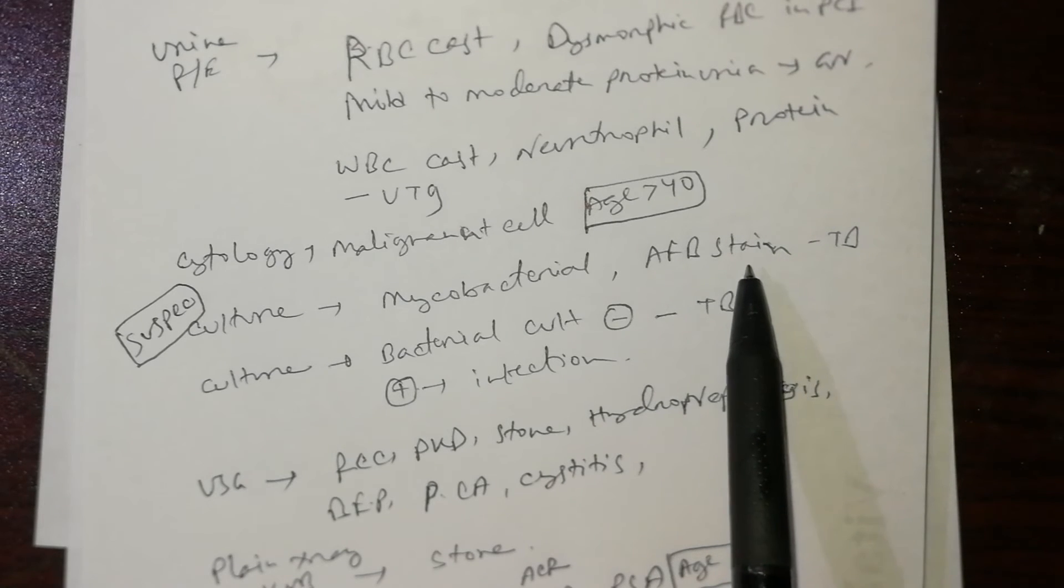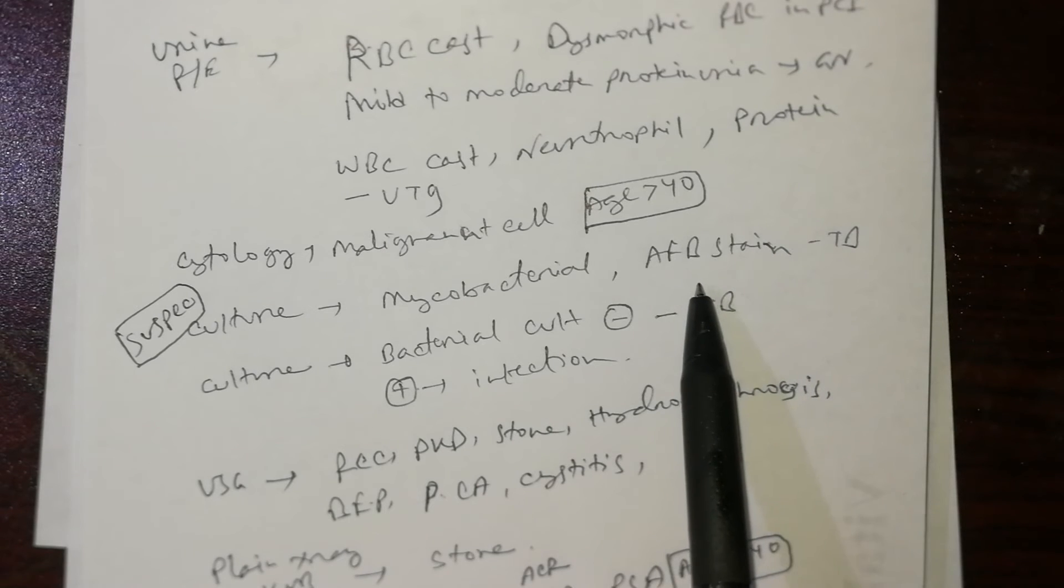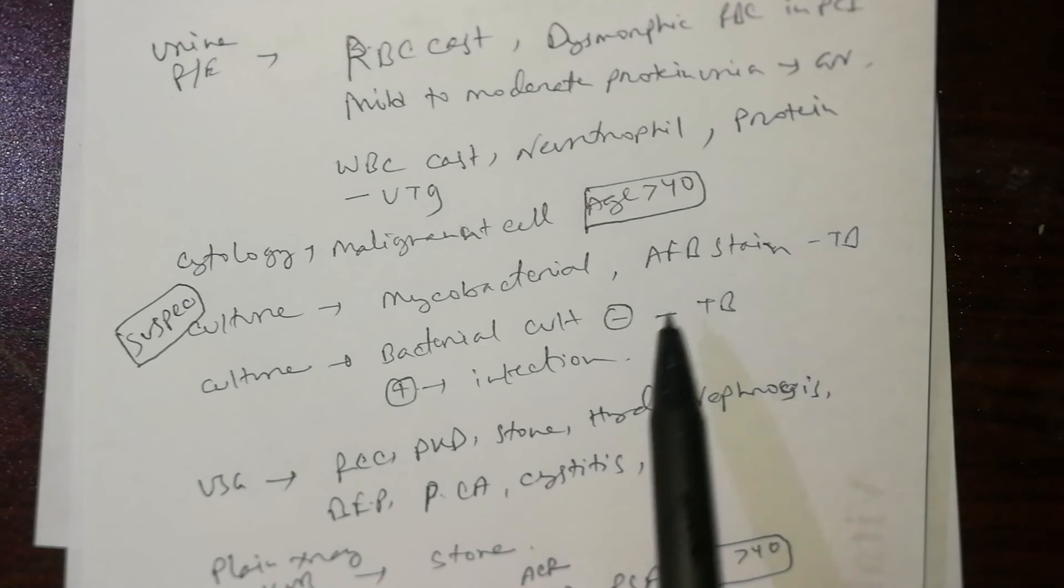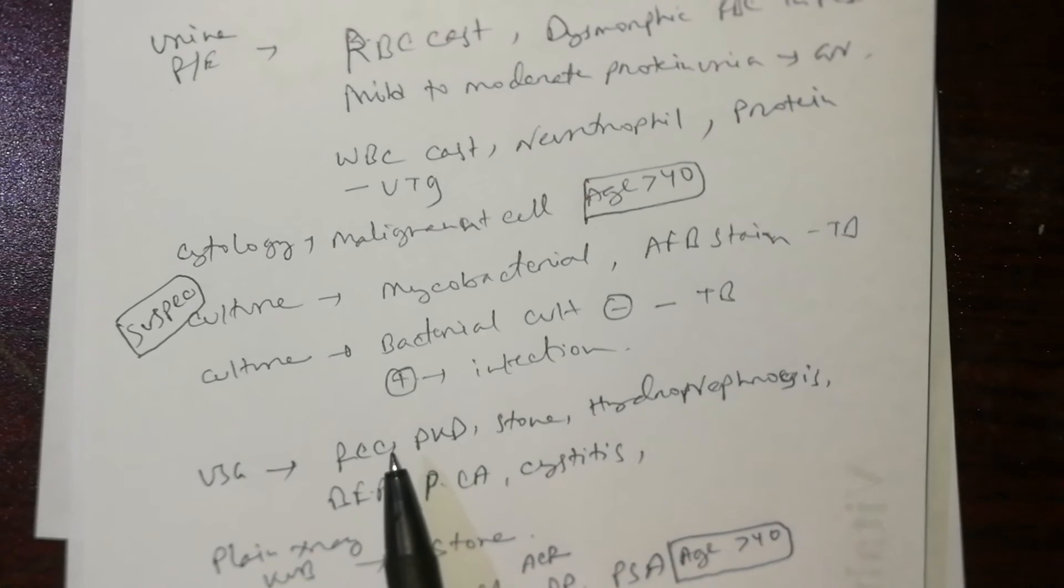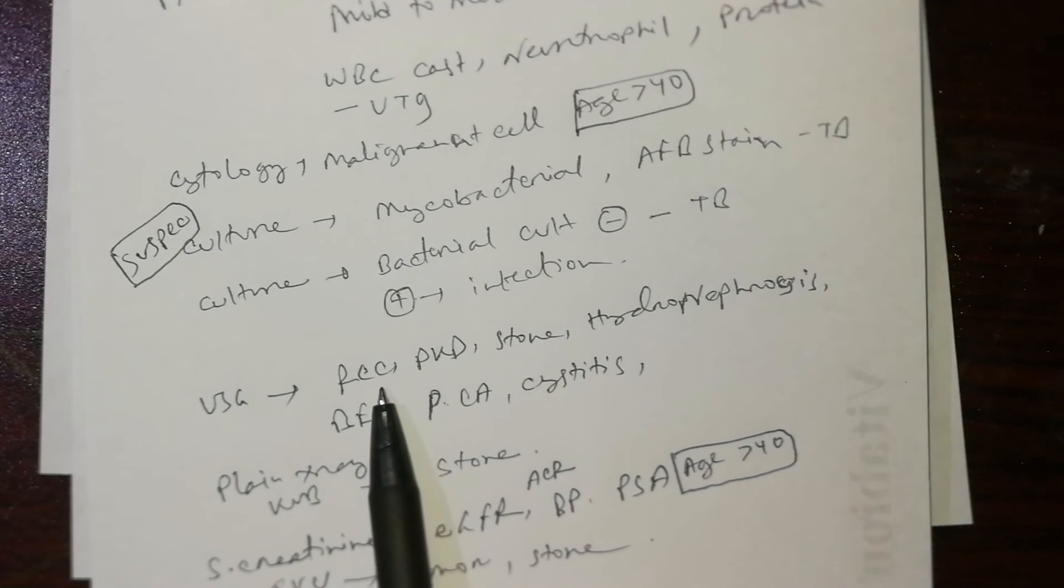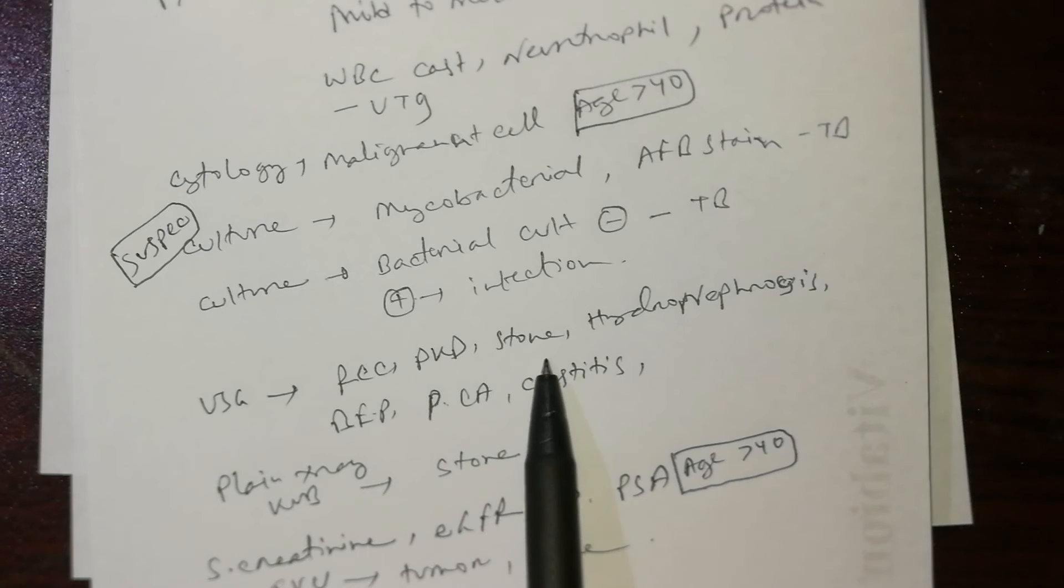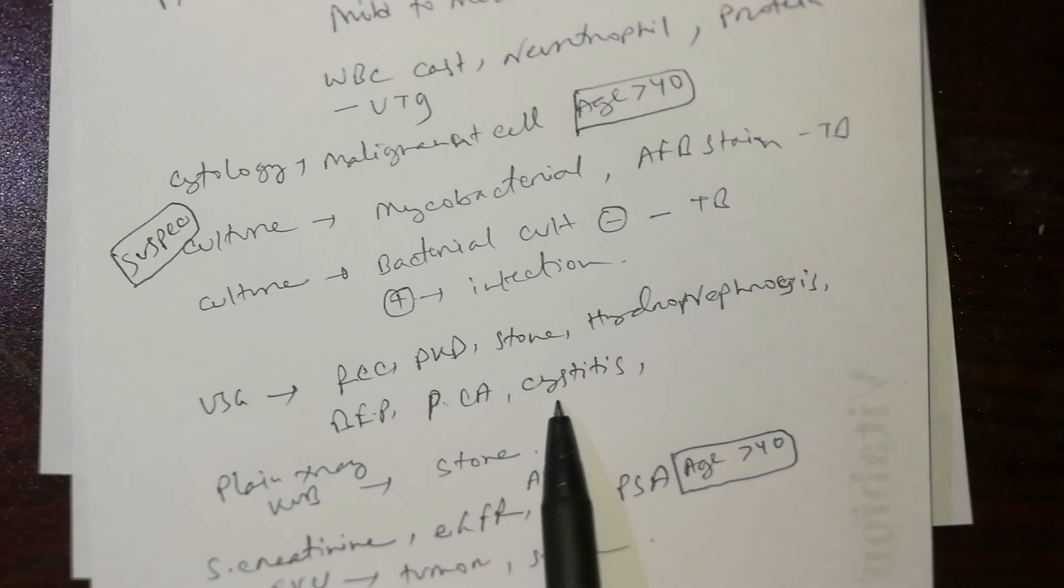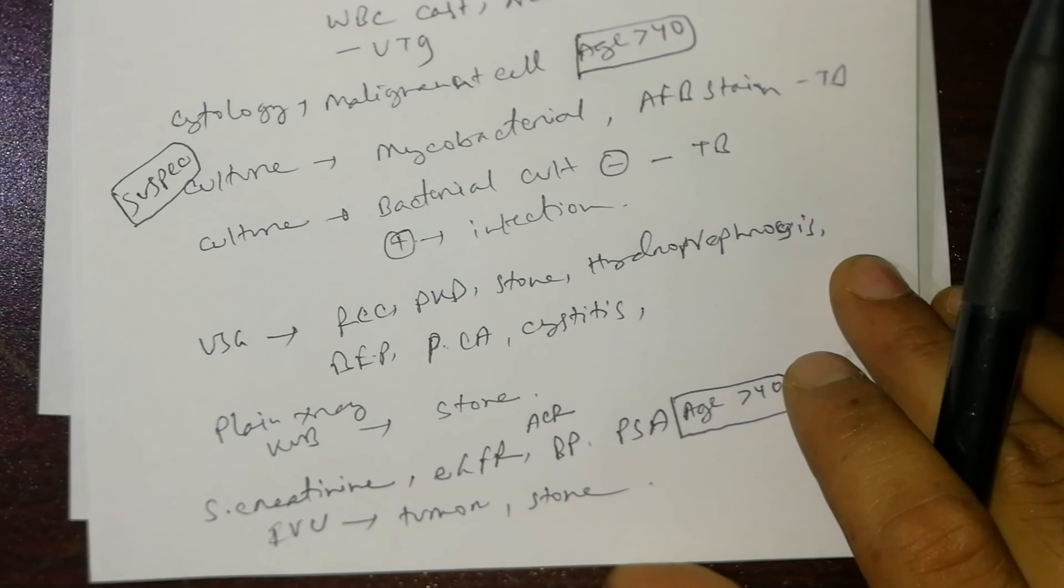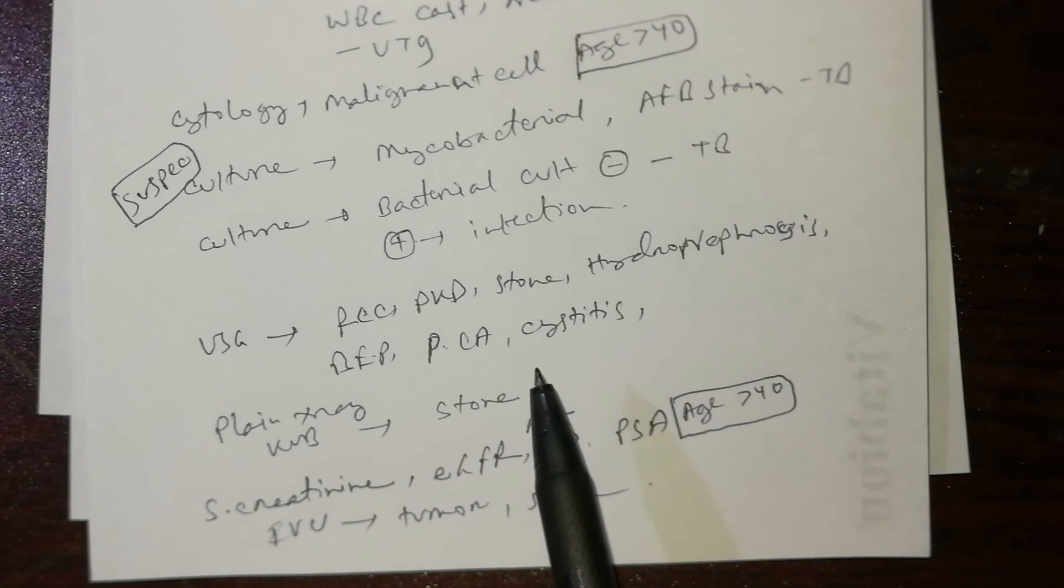Ultrasonography will give you information about renal cell carcinoma, polycystic kidney disease, stones, hydronephrosis, benign enlargement of the prostate or suspicion of prostatic carcinoma, and cystitis. Plain x-ray KUB is especially done for stones or tumors obstructing urine flow in the pathway.